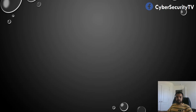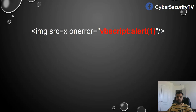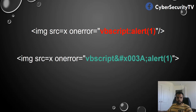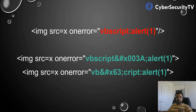Let's take a look at some other encoding techniques. For example, let's say VBScript alert — which I showed you in the second or third slide — is blocked. How do you bypass it? One way is you can use VBScript and then encode that particular part, like the colon part, and then use it. Another option is to encode the S part and then use it. So these are two variations you can do.